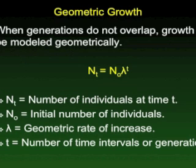A geometric growth pattern is seen in annual plants, where every generation has a constant ratio of increase. Here we can see a dramatic increase over the years, as explained in the book, for the hypothetical population of flocks.